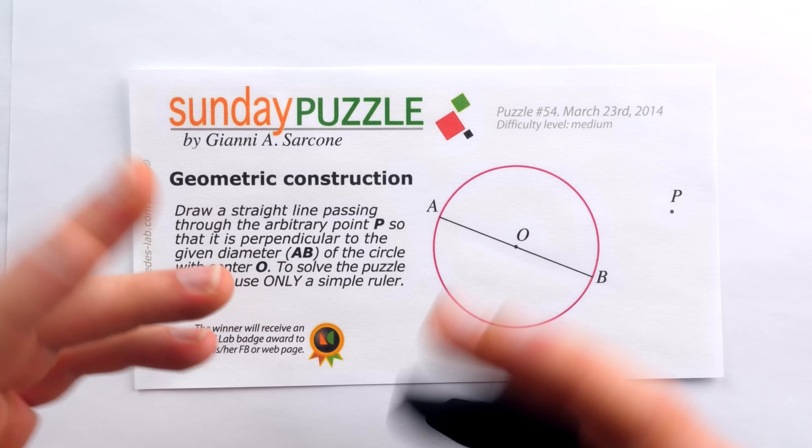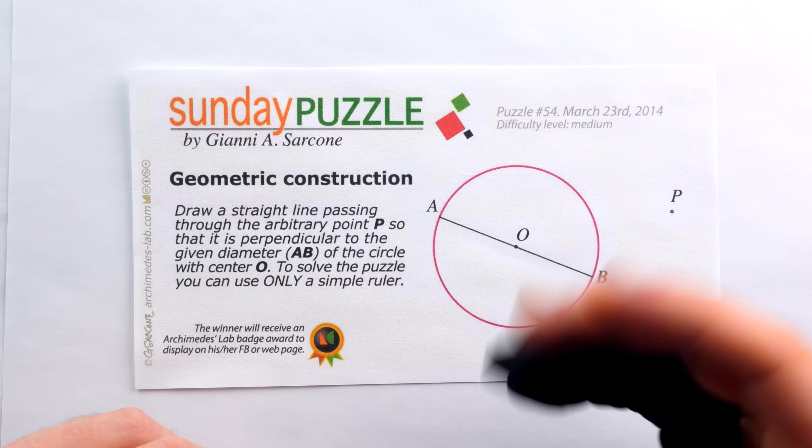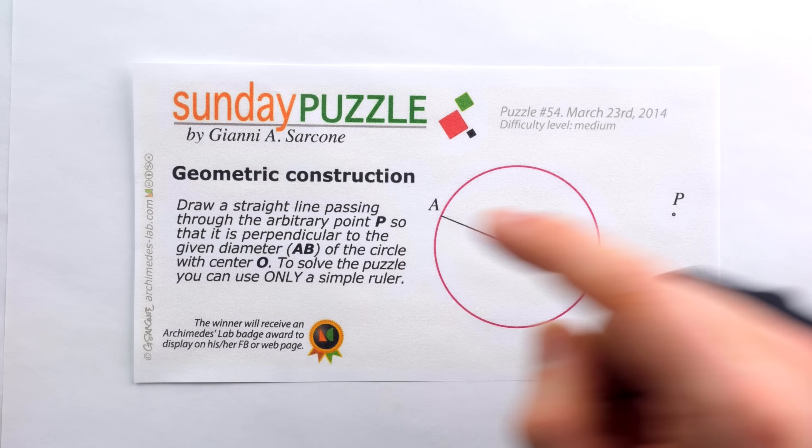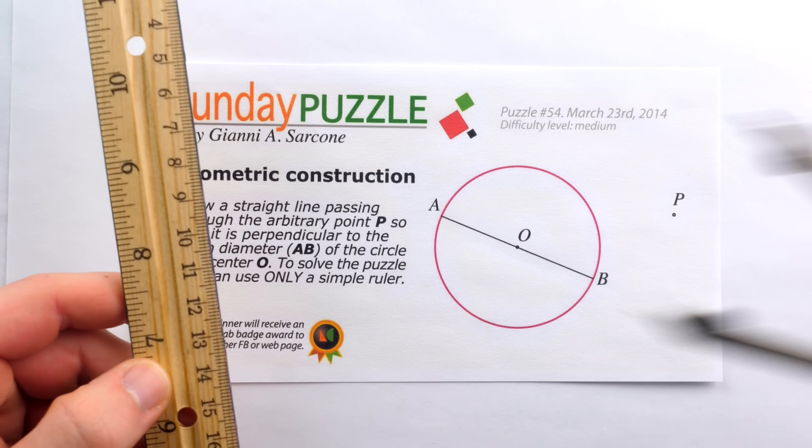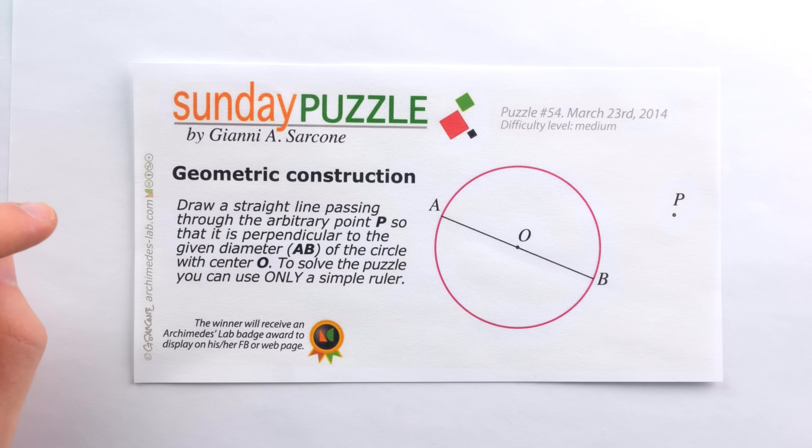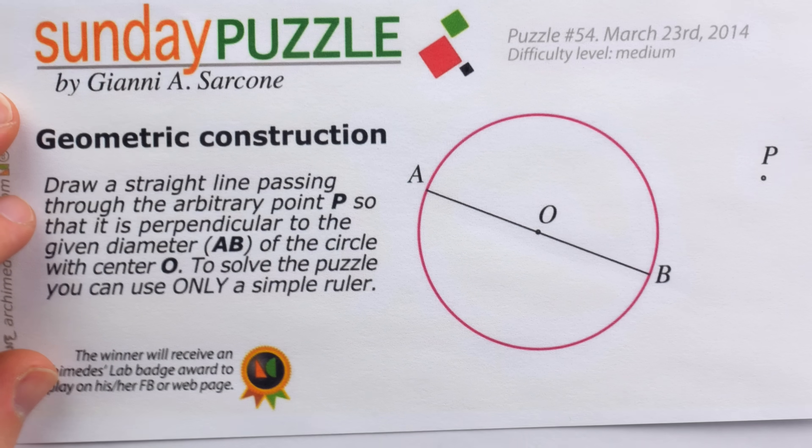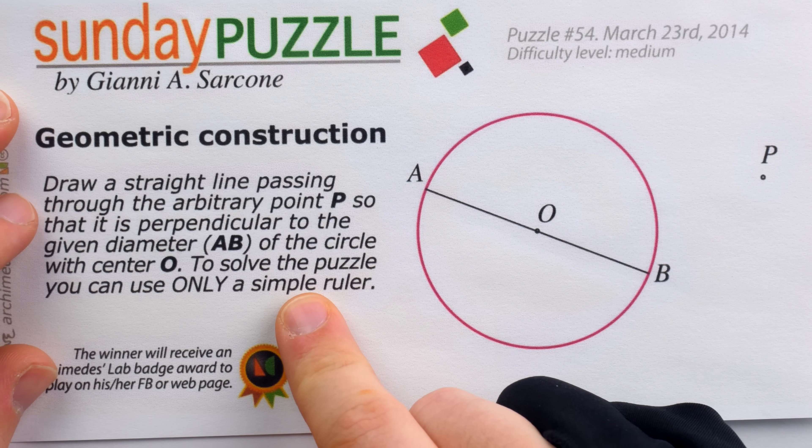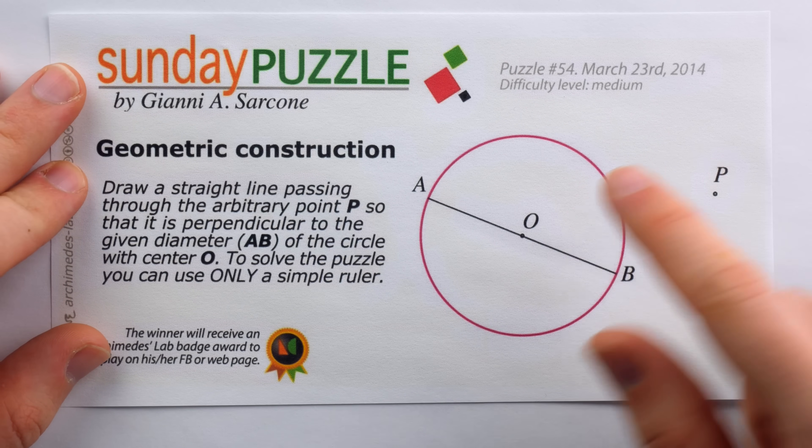One of the most classic types of mathematical problems is that of a geometric construction with only a straight edge and a compass. We're going to solve this puzzle from ArchimedesLab.com using only a straight edge, no compass required.